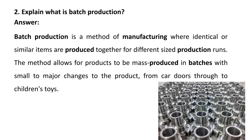There are three types of production: job production, batch production, and mass production. Batch production is a method of manufacturing where identical or similar items are produced together for different size production runs. The method allows products to be mass produced in batches with small to major changes — from a car door to children's toys. Products are manufactured in a batch size or lot size, and that is known as batch production.